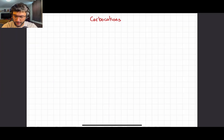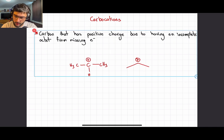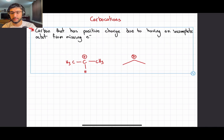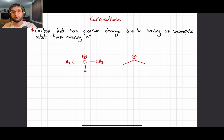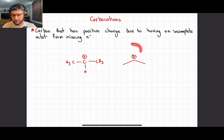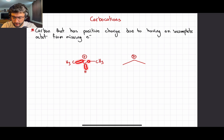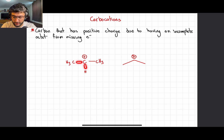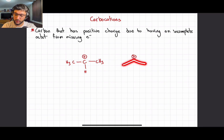To kick off this video, we're going to start by defining what a carbocation actually is. Carbocations are just carbons that have positive charges due to having an incomplete octet — missing electrons. Here are two examples of the same molecule, one in bond-line structure. As we can see, carbon only has three bonds; carbon is supposed to have four bonds if it doesn't want to have a charge, but in this case it has three, so it's missing electrons and carries a plus charge.